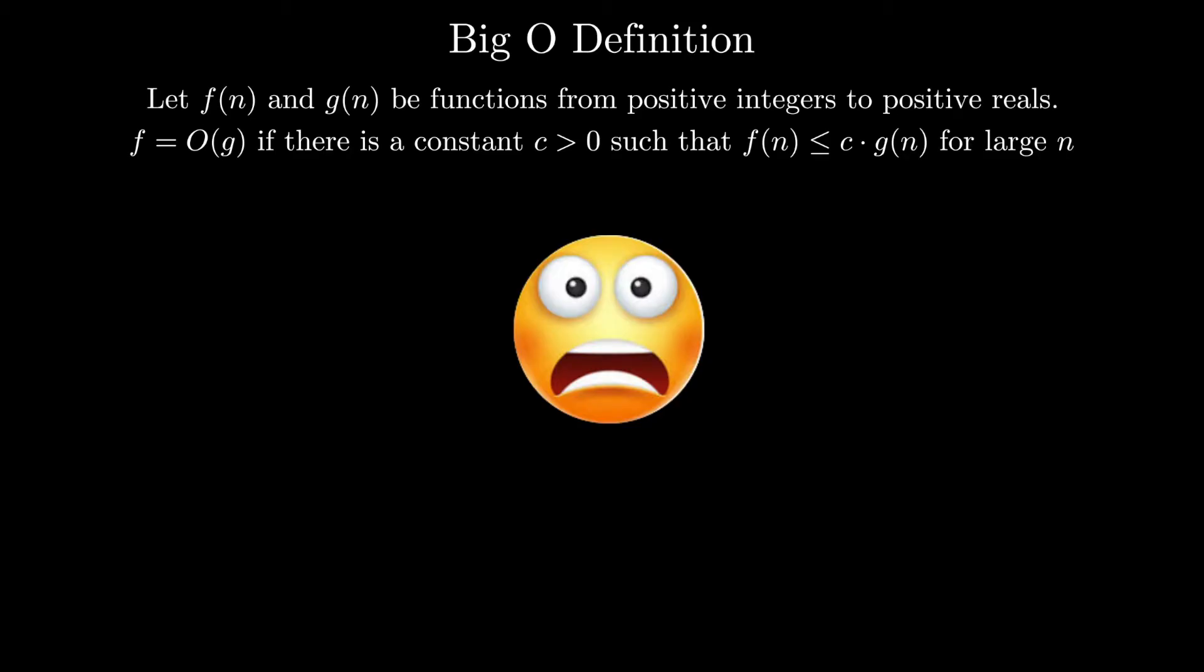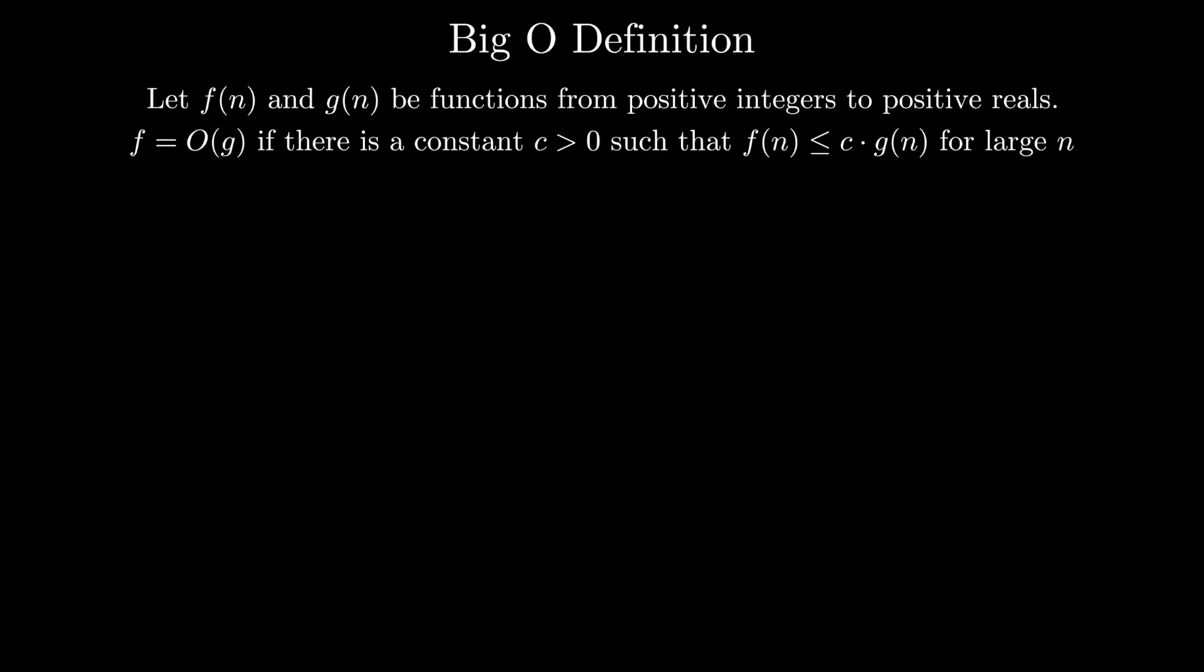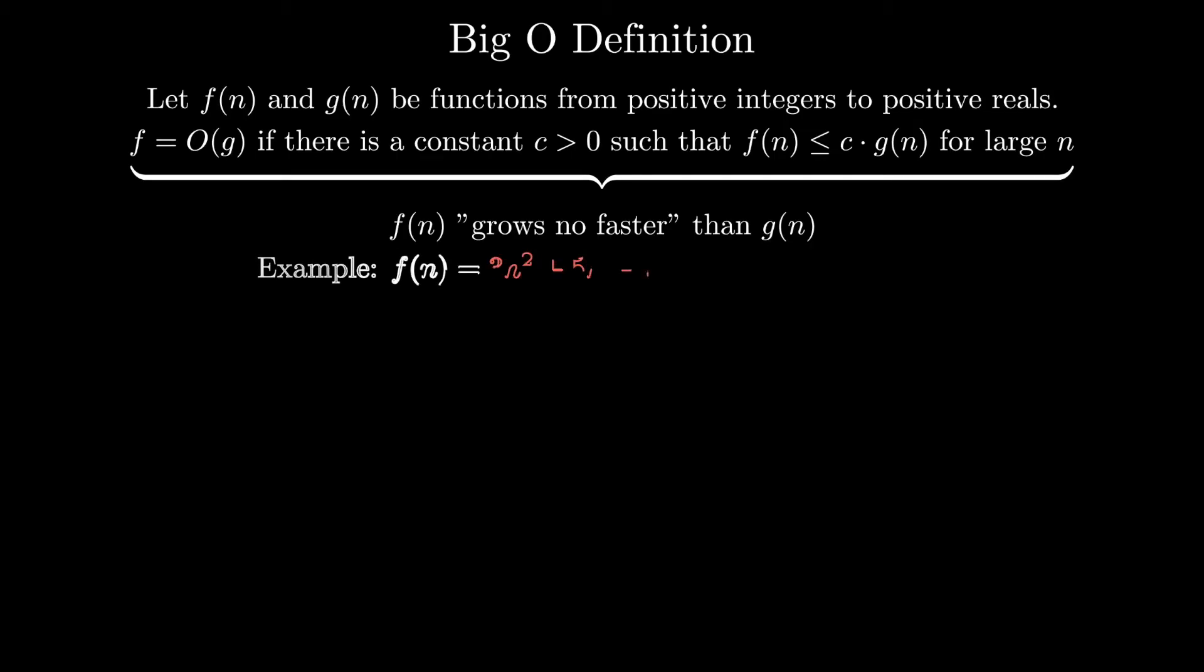First off, another way to read the second half of this function in more layman's terms is that f of n grows no faster than g of n. Second, f of n and g of n are just functions. So let's use an example to clear things up. Suppose f of n is a random function like 3n squared plus 5n plus 4. We know from our simplified understanding of Big O notation that this should be O of n squared because the most dominant term here is the n squared term and we don't care about constants. This means that our respective g of n function should be n squared.